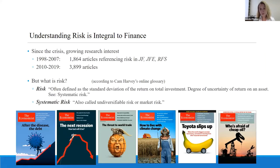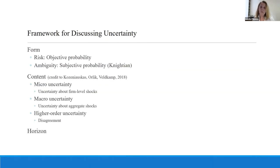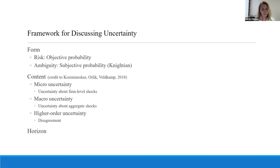As empiricists, how should we be thinking about risk? Even the term risk is a little narrow — I think the bigger term is uncertainty. When we think about uncertainty, we can think about what form it takes: there's risk, where we have objective probabilities, as well as ambiguity or subjective uncertainty. These are very different constructs that have very different impacts on both corporations and markets. We can think about the content of the uncertainty — micro uncertainty at the firm level, even the household level, macro, aggregate, or countrywide, and then disagreement, higher order uncertainty.